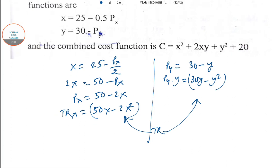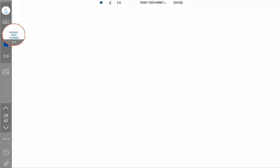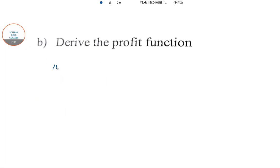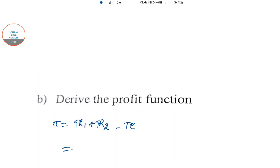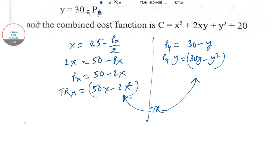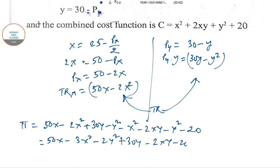Now combined cost function is also given, so we need to find the profit function. Profit function π = TR1 + TR2 - TC. So the profit function I can directly write as 50x - 2x² + 30y - y² - x² - 2xy - y² - 20, which is 50x - 3x² - 2y² + 30y - 2xy - 20. So this is our profit function.